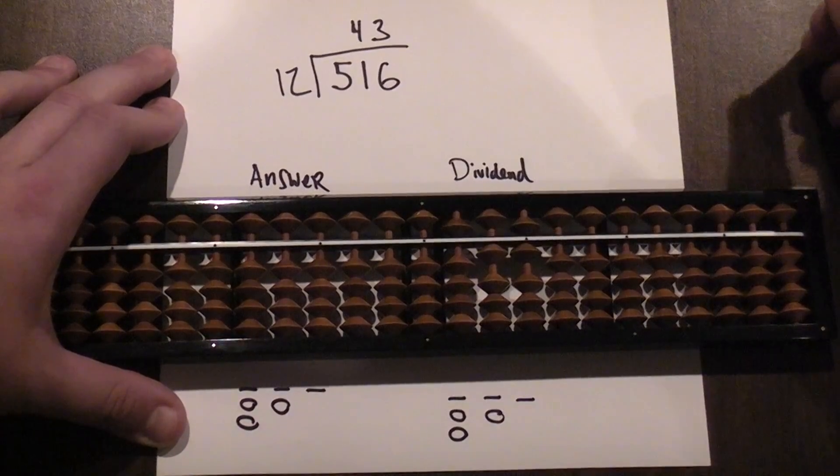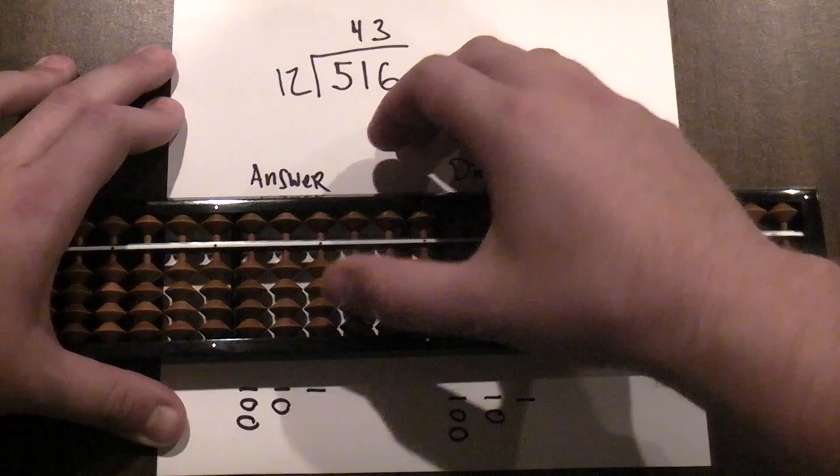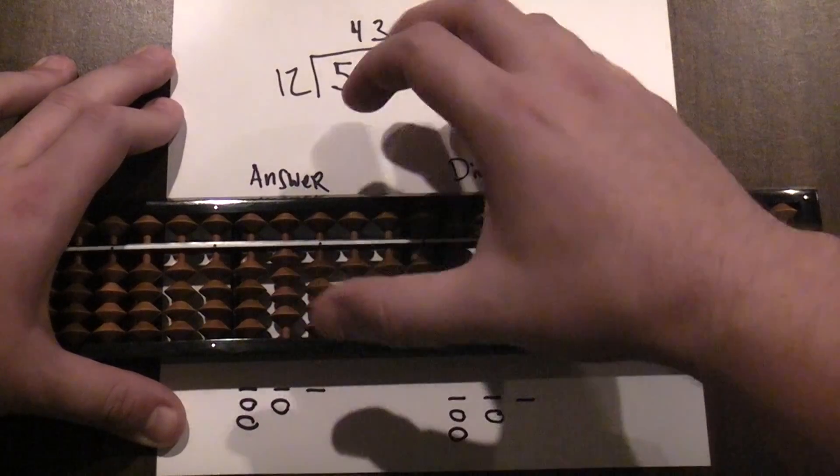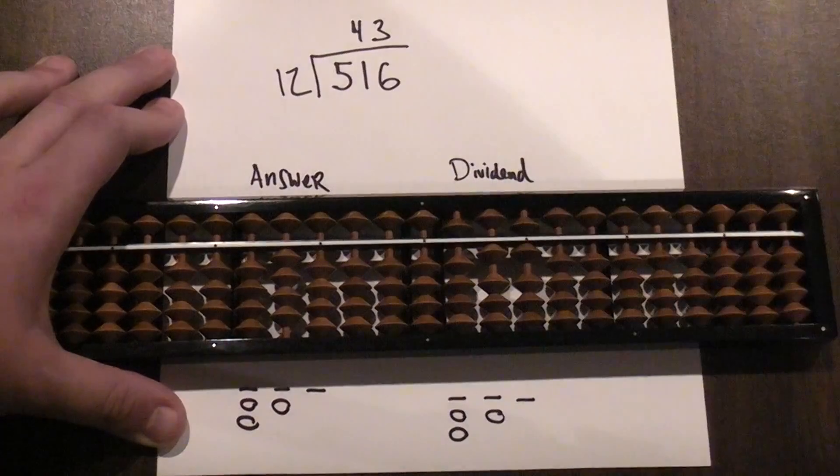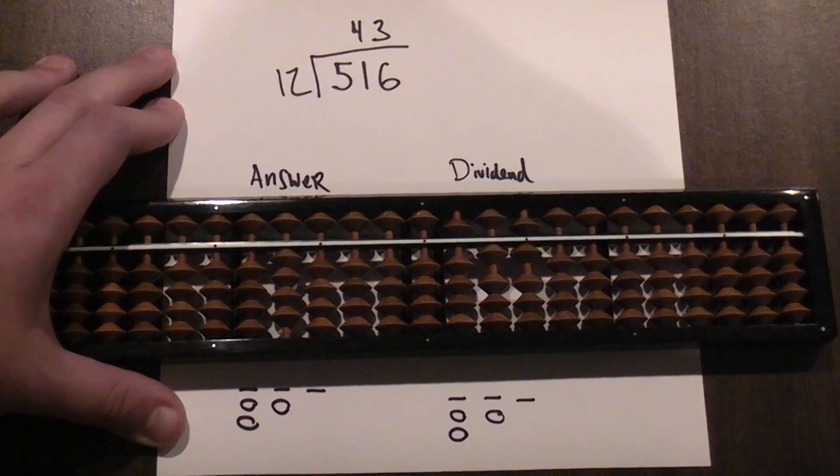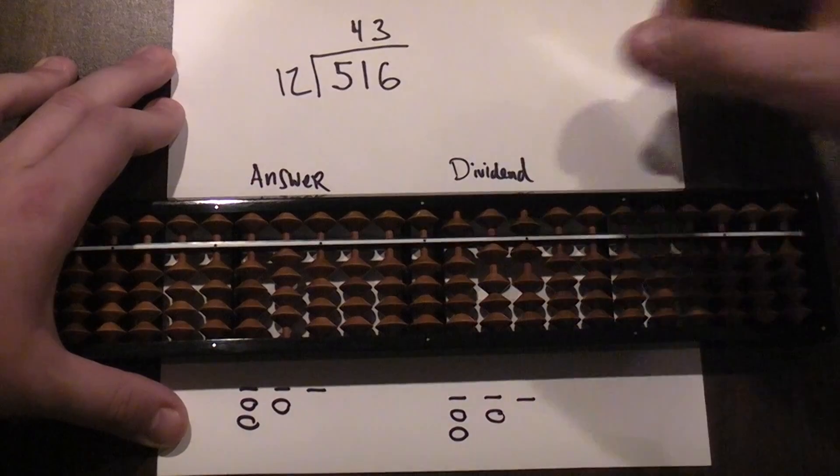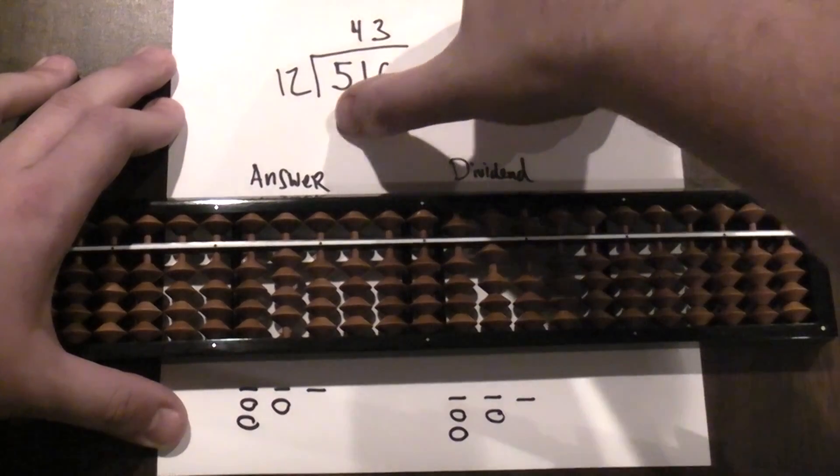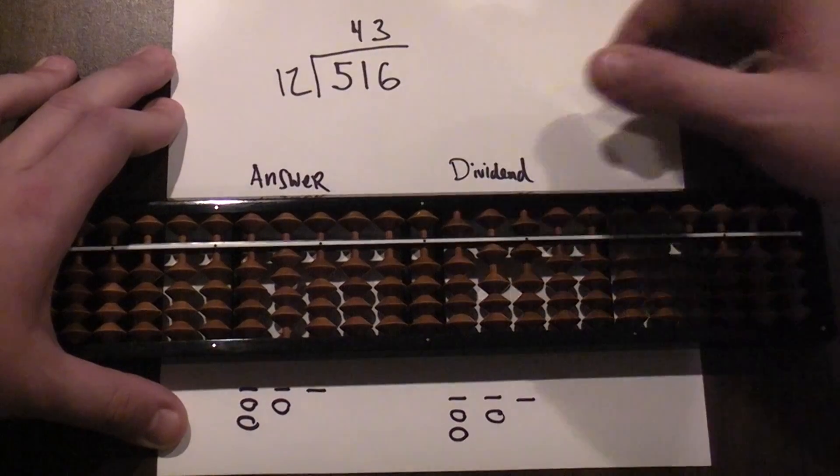I know I'm going to have a two-digit answer so I start over here in the tens column and I need to multiply 12 by 4. So I enter 4 here where I'm entering my answer. 12 times 4 is 48, so now I need to subtract 48 from this 51 just like we would in long division.